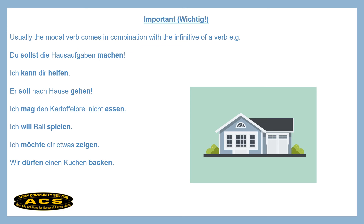Usually the modal verb comes in combination with another verb — the infinitive form of a verb in German, called Vollverb. When we look at the first example sentence: 'Du sollst die Hausaufgaben machen' — you should do the homework. We have 'sollst,' which is conjugated from 'sollen,' and 'machen,' which is the unconjugated infinitive form. The modal verb 'sollst' modifies the infinitive verb that follows.